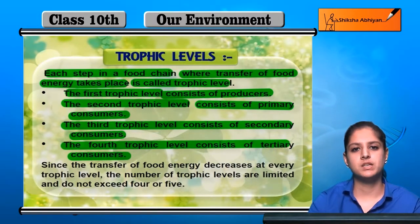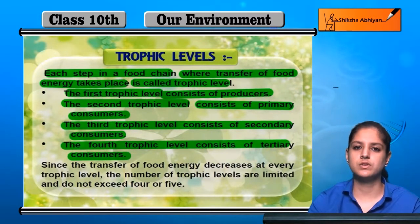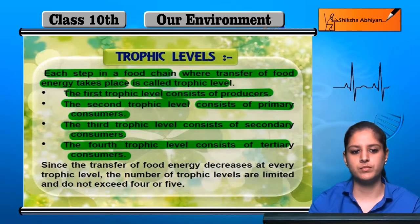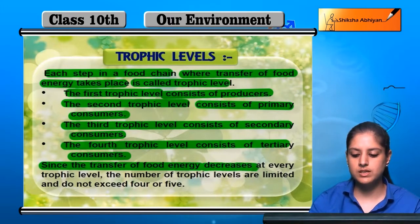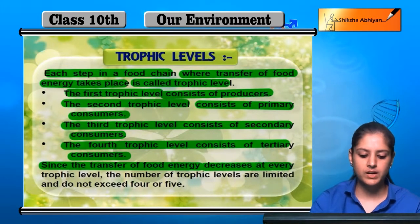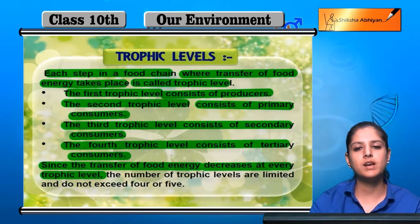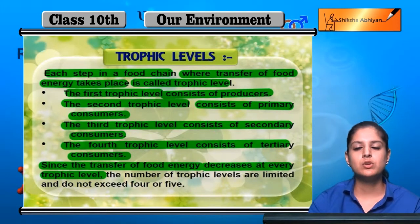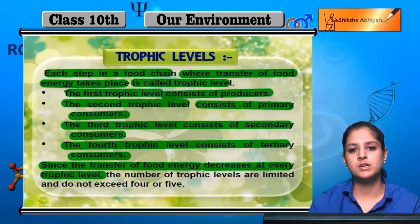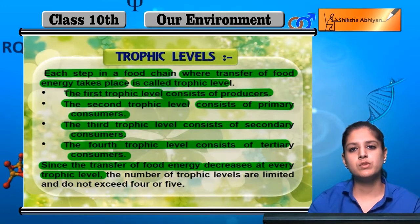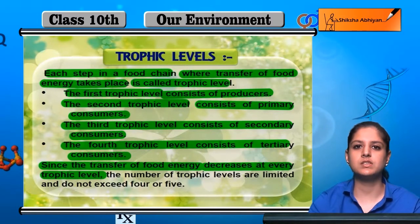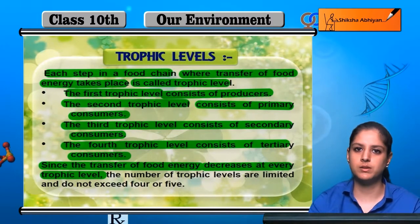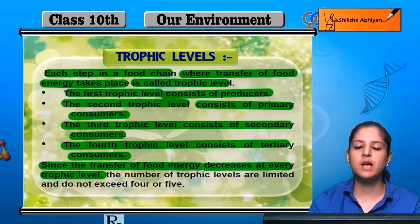When we increase every level, the energy transfer — the flow of energy — is reduced. Since the transfer of food energy decreases at every trophic level, it reduces at every level. At one point it becomes very low, and ultimately it decreases further. So if the levels were to go on more, the energy would become extremely minimal.